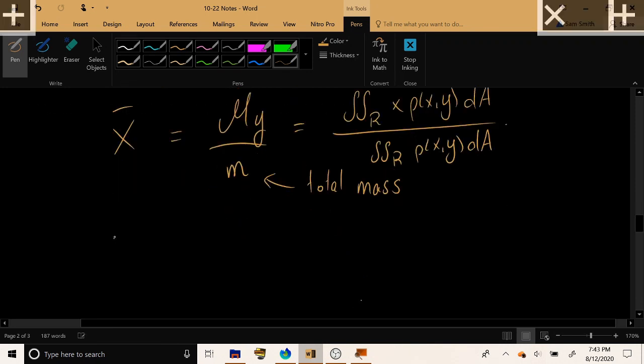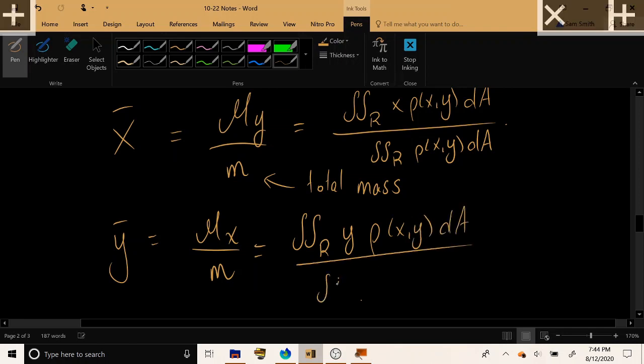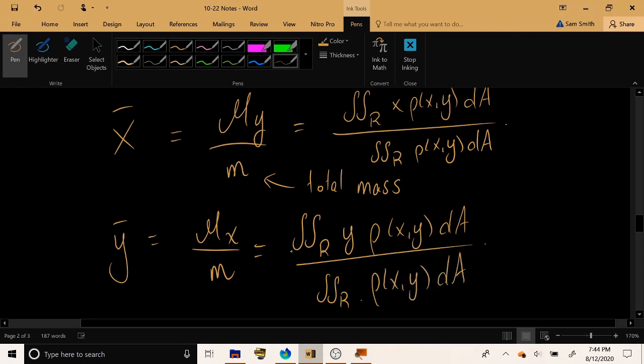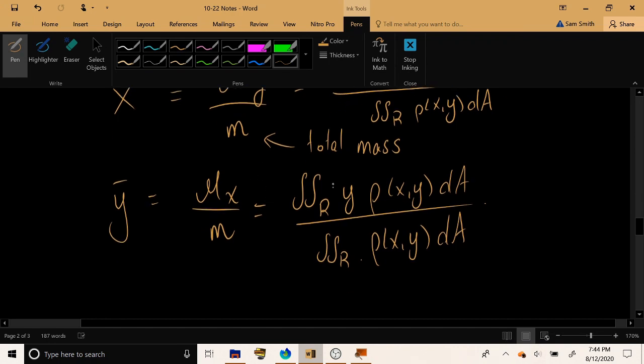Now, to find ȳ, it's simply the opposite. We take the moment about the x-axis and divide it by the total mass. Or, you may find it more helpful, and I personally find it easier to remember, that we can just take the double integral of y·ρ(x,y) and divide it by the integral of the density ρ(x,y). I find this formula slightly easier to remember than the one that references moments.